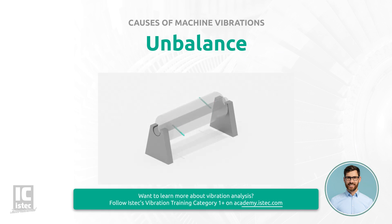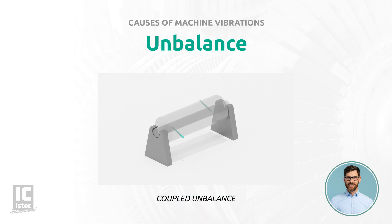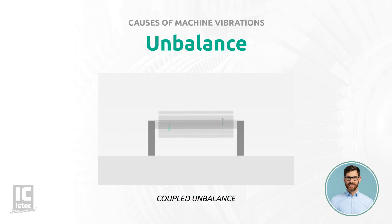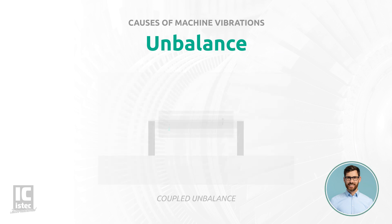Second, coupled unbalance appears when a rotating object has two or more unbalanced masses in different planes. These equal each other out in its rest position. When the machine starts to rotate, these masses will be influenced by centrifugal forces, which leads to vibration.